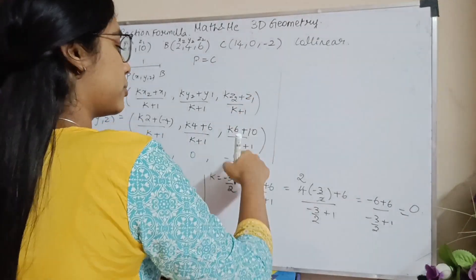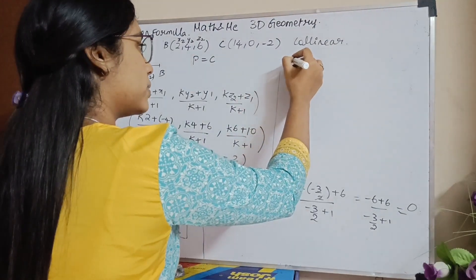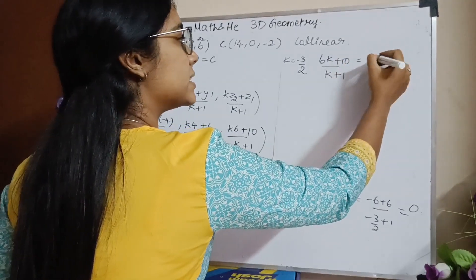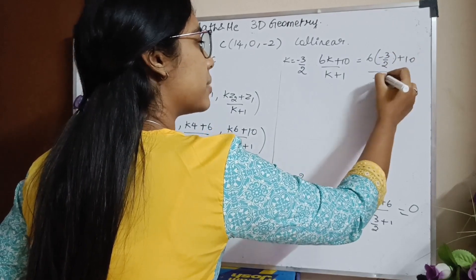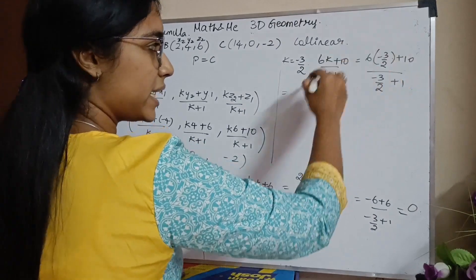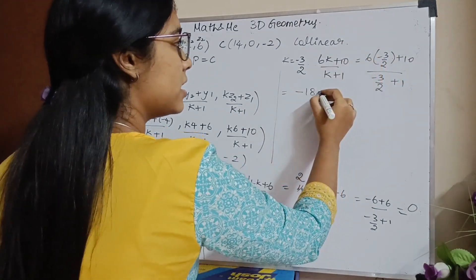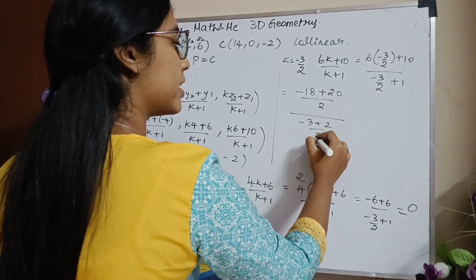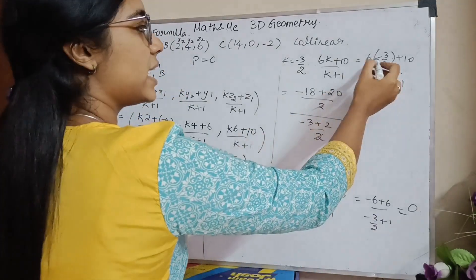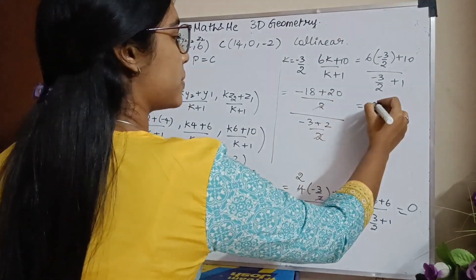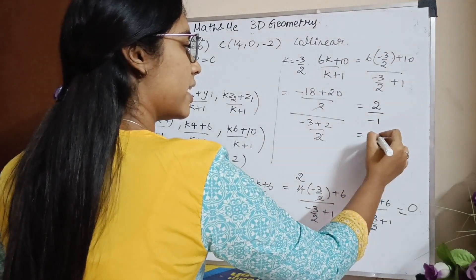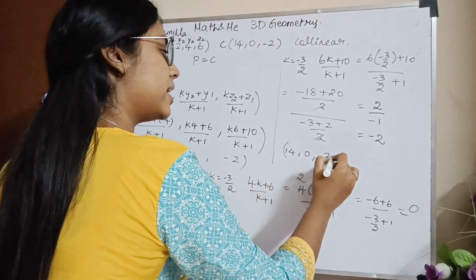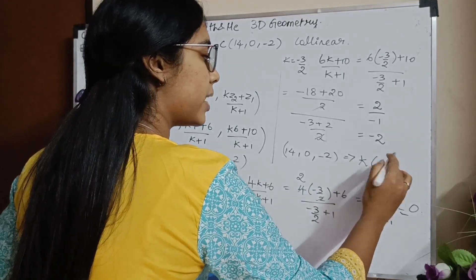Similarly, for the Z coordinate, I put the value of K in 6K plus 10, divided by K plus 1. So 6 times minus 3 by 2 plus 10, divided by minus 3 by 2 plus 1. Taking LCM, I get minus 18 plus 20 over 2, divided by minus 3 plus 2 over 2. Cancelling the 2s, I get 2 divided by minus 1, which is minus 2. So the points are 14, 0, and minus 2.